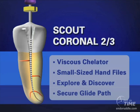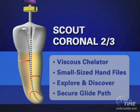When scouting canals, use a viscous chelator. A viscous chelator does three important things: one, it is a superior lubricant; two, it is an emulsifier; and three, debris generated by the hand file is more effectively held in suspension. Examples of viscous chelators are RC Prep, ProLube, and Glide. We will use a size 10 hand file in the presence of a viscous chelator to secure canals.